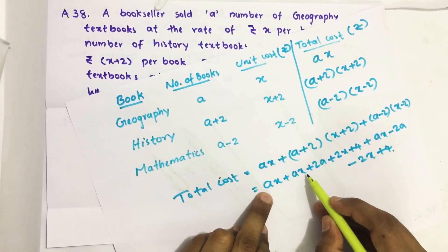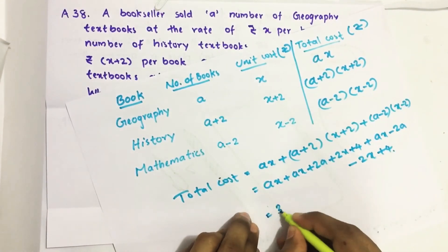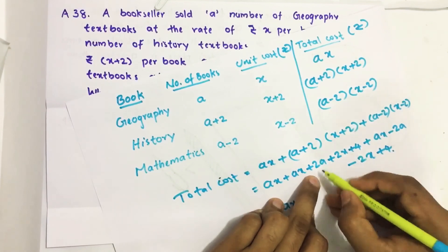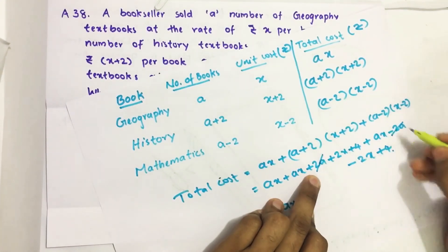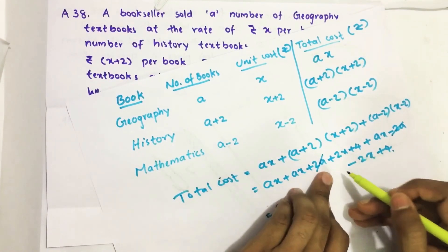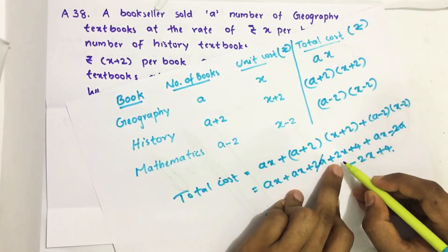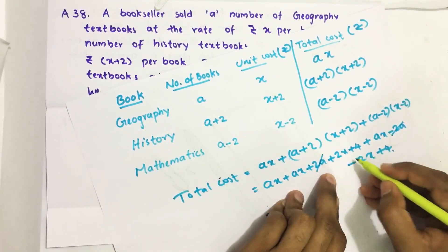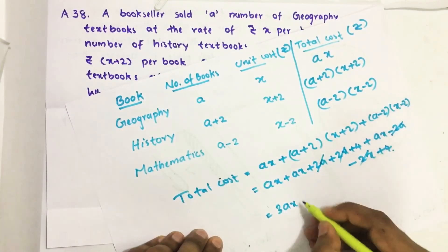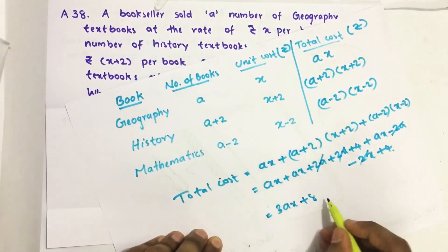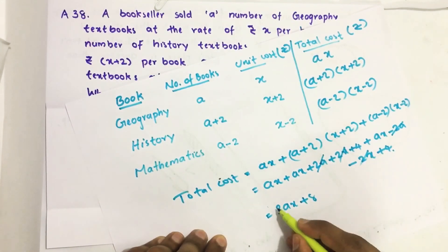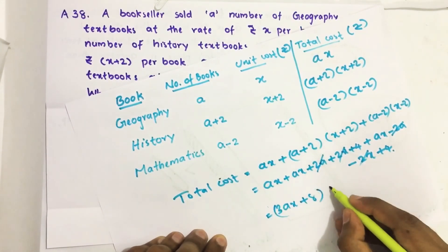ax plus ax plus ax gives three ax. Then plus 2a and minus 2a cancel to zero. Plus 2x and minus 2x also cancel. Then plus 4 and plus 4 gives eight. So total cost equals three ax plus eight rupees.